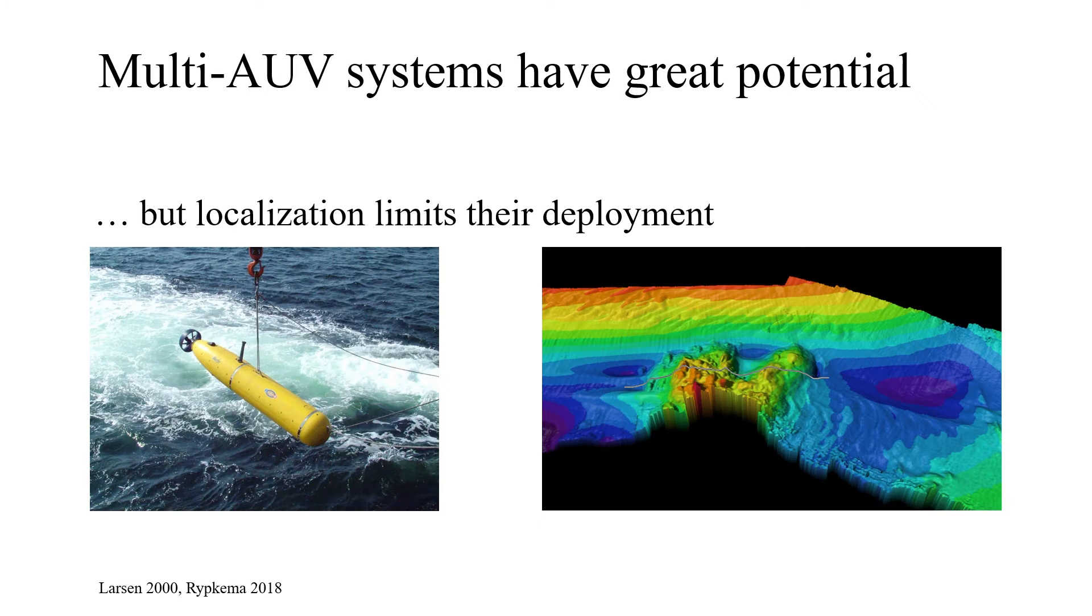There are a number of tasks which have benefited greatly from the capabilities of AUVs. A list of such tasks should include sensing of algal blooms or mapping of the seafloor. Multi-AUV systems have the potential to improve our ability to accomplish such tasks by allowing for autonomous and distributed oceanographic sensing, achieving efficiencies and sensing resolutions otherwise difficult to accomplish. However, multi-AUV deployments have been largely limited by challenges in localization.